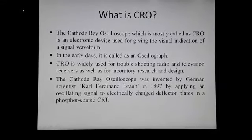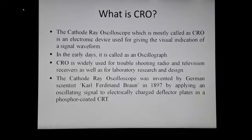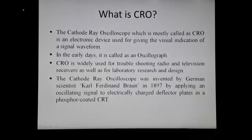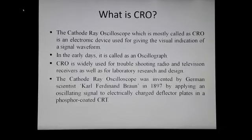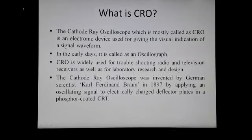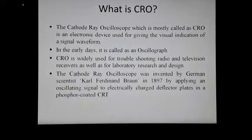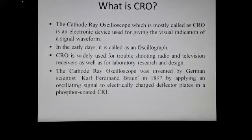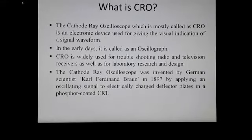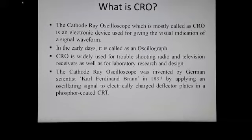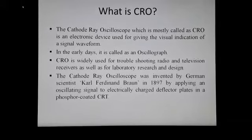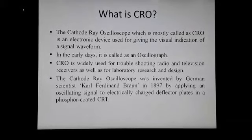The cathode ray oscilloscope, mostly called as CRO, is an electronic device used for giving the visual indication of a signal waveform. In the early days, it was called an oscillograph. CRO is widely used for troubleshooting radio and television receivers as well as for laboratory research and design. The CRO was invented by German scientist Carl Ferdinand Braun in 1897 by applying an oscillating signal to electrically charged deflector plates in the phosphor-coated CRT.